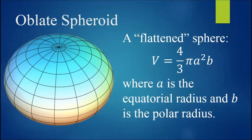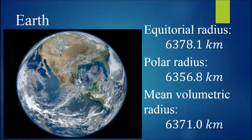An oblate spheroid is a special type of ellipsoid, which we can think of as a flattened sphere. The volume contained in an oblate spheroid is given by four-thirds pi a squared b, where a is the equatorial radius and b is the polar radius. The surface of the Earth is very closely approximated by an oblate spheroid, since there is a slight elongation along the equator. The equatorial radius of the Earth is 6,378.1 kilometers, while the polar radius of the Earth is 6,356.8 kilometers.